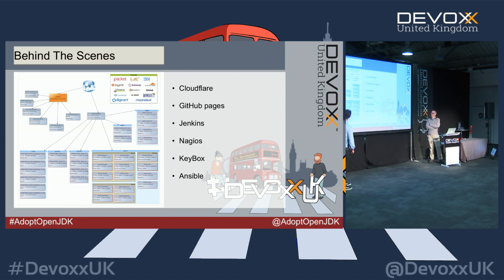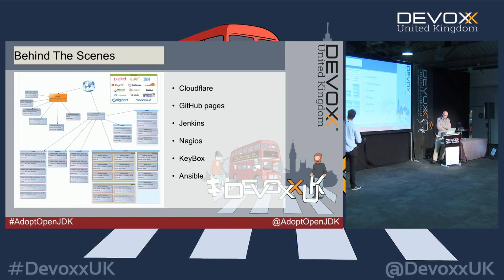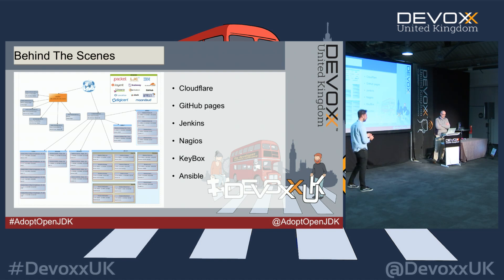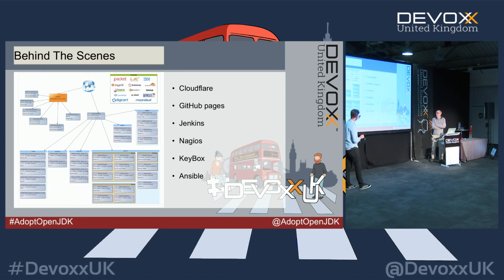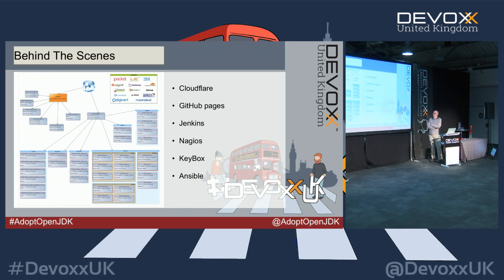That traffic goes to a whole host of servers we're hosting, including the AdoptOpenJDK main website on GitHub Pages, as well as the REST API Tim mentioned, an Ansible server, a staging server for web developers to quickly deploy code and see how it looks, and also Nagios and Jenkins — our main build farm. This area shows just some of the build machines we've currently received.